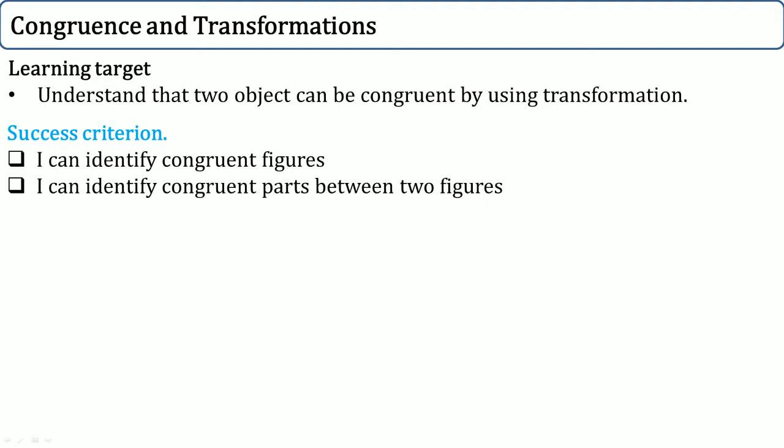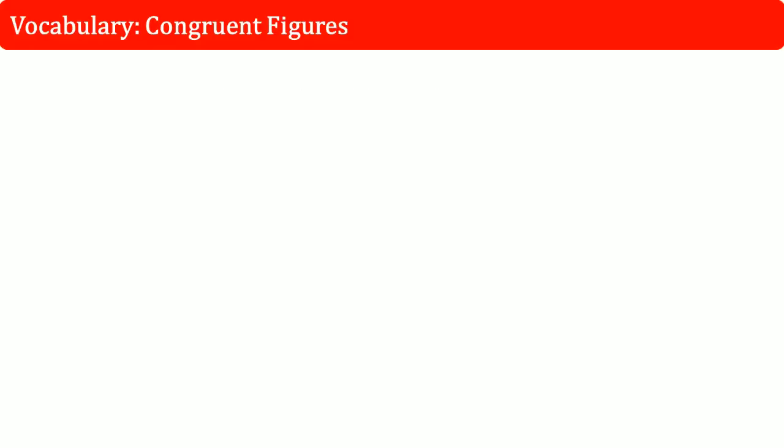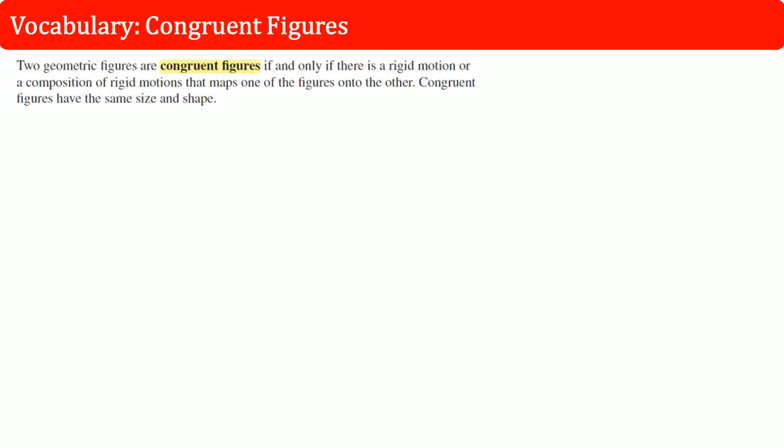Here we'll start with the vocabulary. What are congruent figures? We know that two figures are congruent figures if and only if a rigid transformation or a series or composite of rigid transformations can map one image to another. That means can you translate it, which is slide, can you reflect it, which is flip, or can you rotate it, which is to turn it.